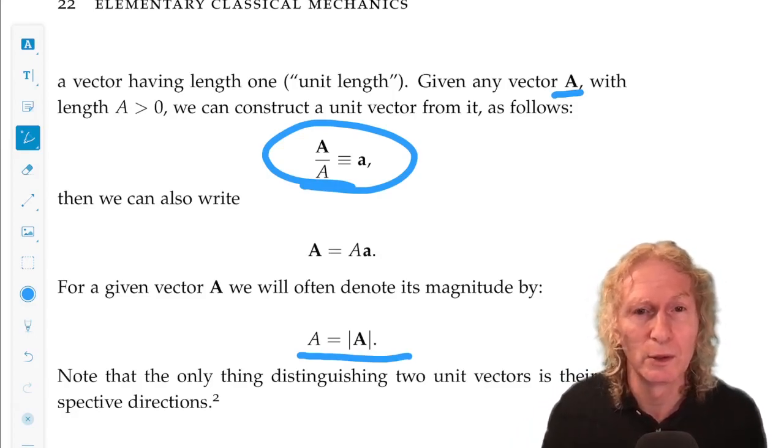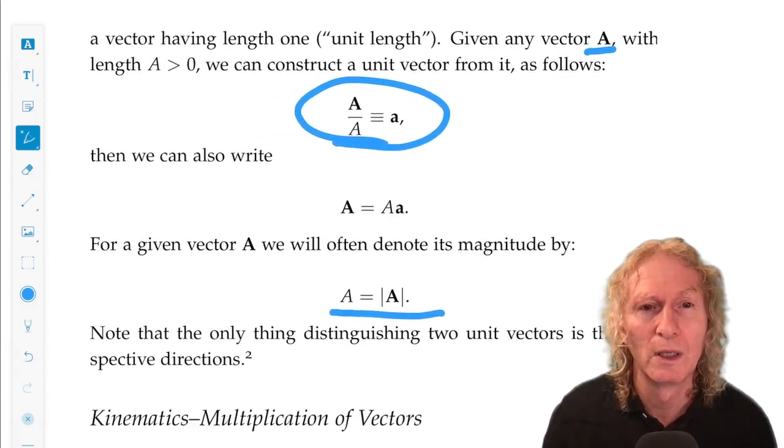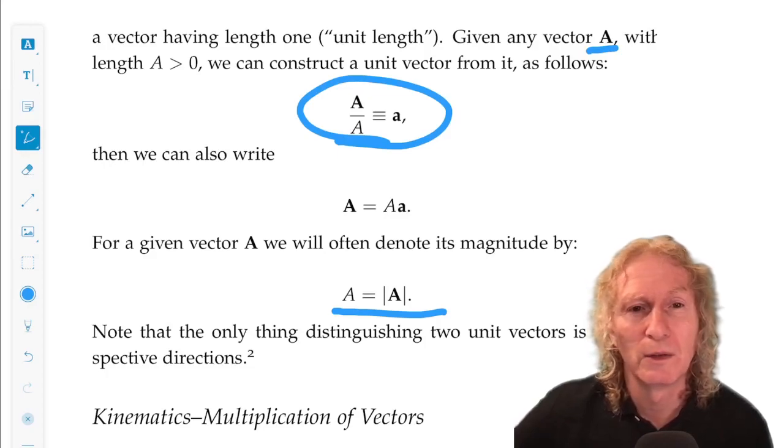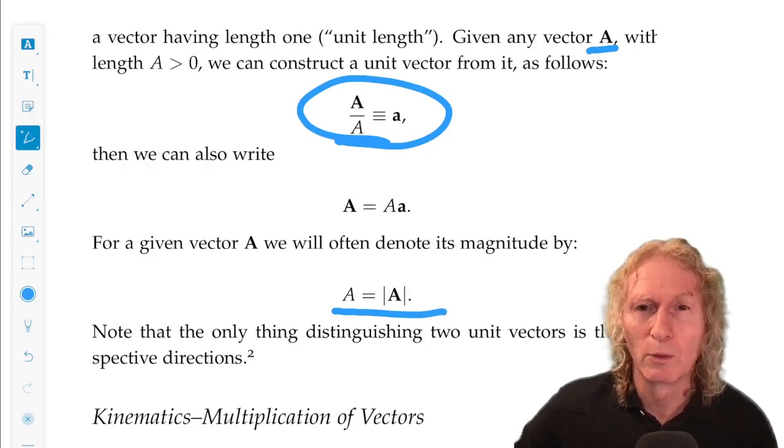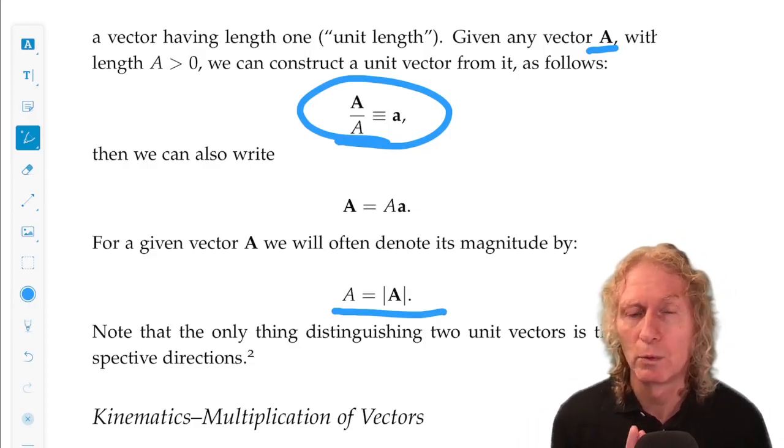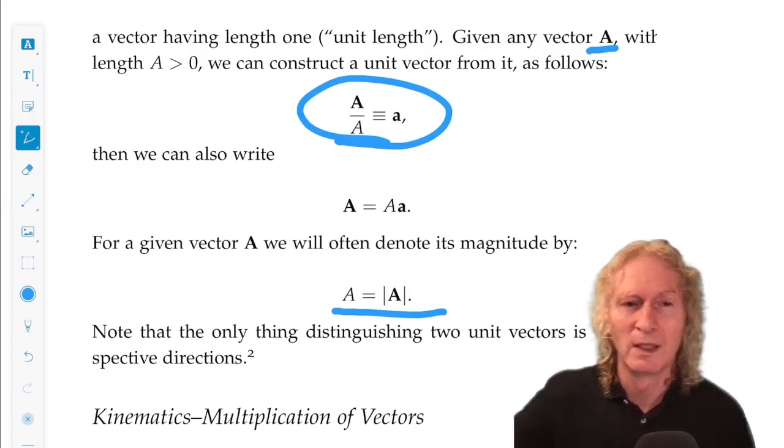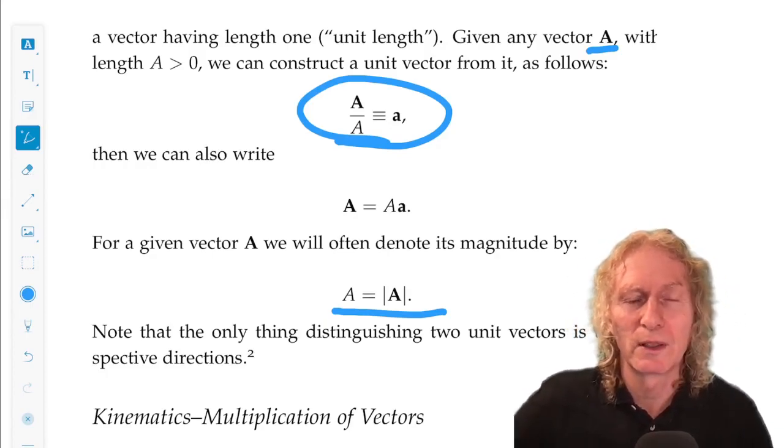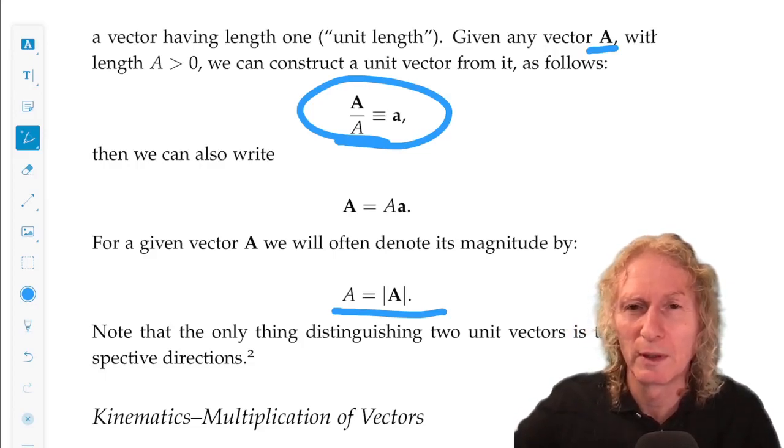So, this is a unit vector corresponding to the vector A. It's a vector of unit length, check it, and it's in the same direction as A. And these are very useful. So, the only thing distinguishing two unit vectors is their directions. Because, by definition, unit vectors have length one. And vectors have two quantities, length and direction. And I say that over and over, but it's going to get tricky when we start doing manipulations with them later on, and you always need to keep that in mind.